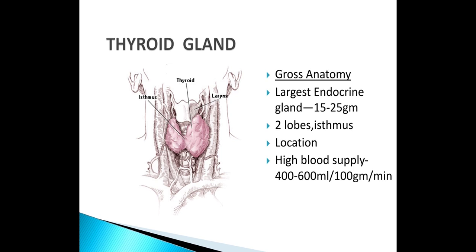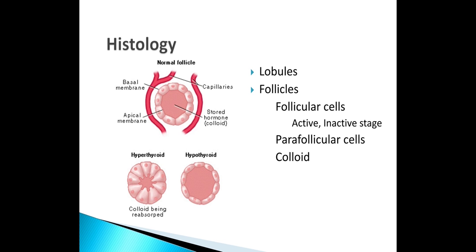You can see the thyroid gland, the larynx, and the lobes. The lobes are made up of multiple follicles. These follicles contain the acini, which is the unit of the gland.